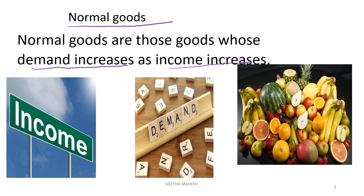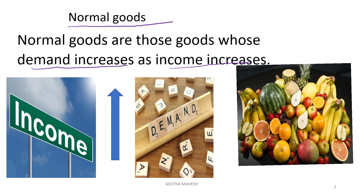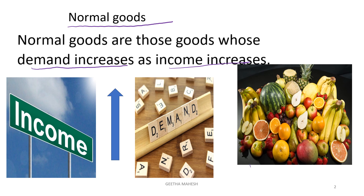So you can see here, income of the consumer and demand for normal goods — there is a direct relationship. Good examples for normal goods are fruits and vegetables.